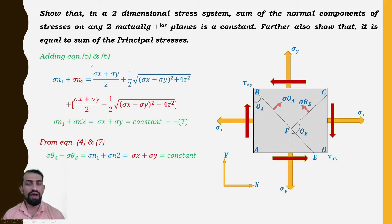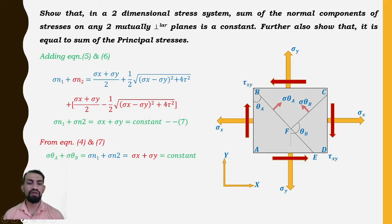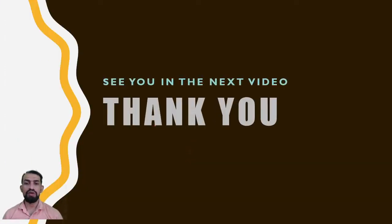Adding equations 5 and 6: σn1 + σn2 = σx + σy. From equations 4 and 7 we conclude that σθ_a + σθ_b = σn1 + σn2 = σx + σy, which is constant. This completes the proof. Thank you, see you in the next video.